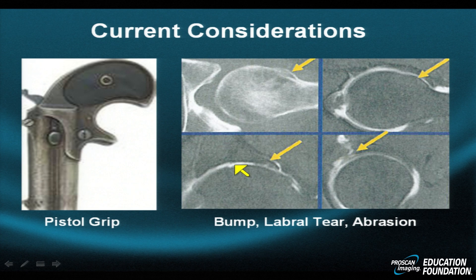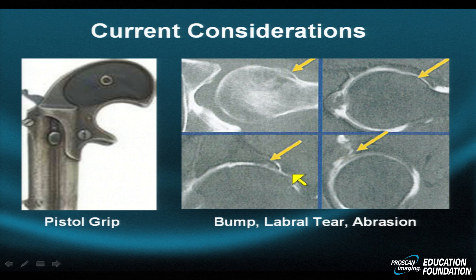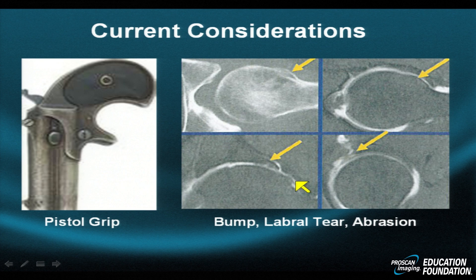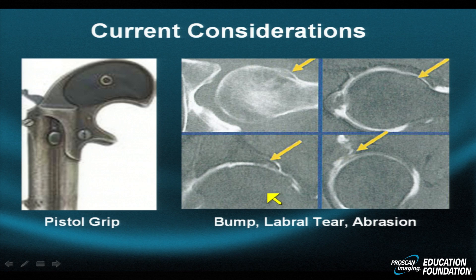Chondromalacia has ensued. A small bump is present in the coronal projection, and a sagittal view demonstrates a longitudinal tear with diffuse swelling. The abnormal signal and loss of hyaline cartilage at the tip is known as a hyaline cartilaginous abrasion.